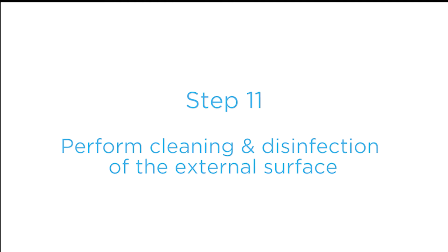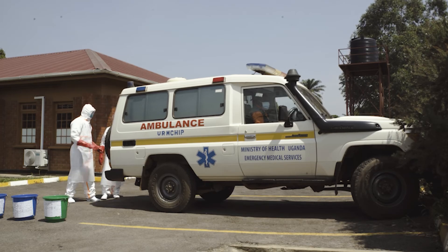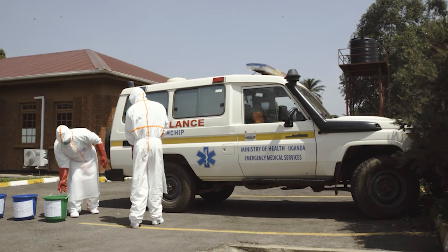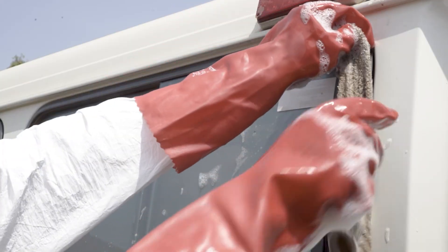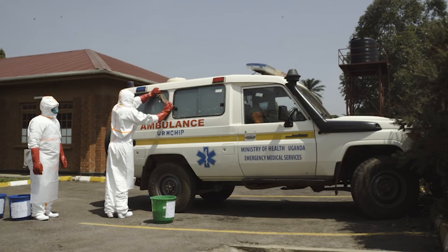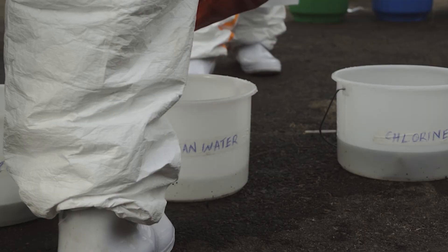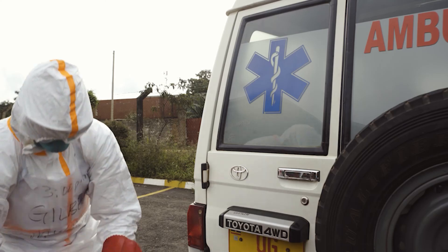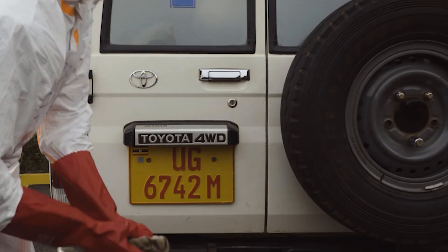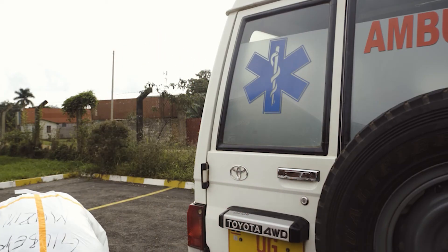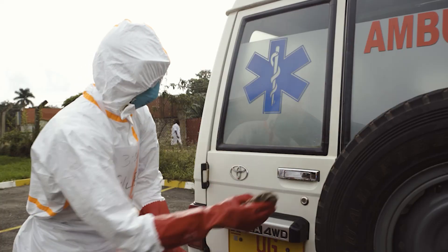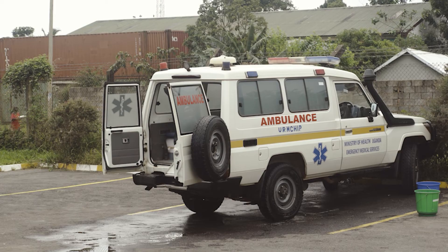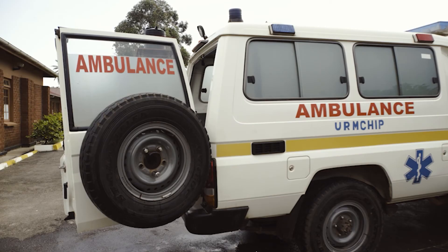Step eleven: perform cleaning and disinfection of the external surface. Clean thoroughly the external ambulance surface using separate buckets and newly prepared solutions. First, clean with soapy water. Second, rinse with clean water. Third, disinfect with 0.5% chlorine. Please note that the exterior of the ambulance does not require a full disinfectant wipe down, except for door handles. After a contact time of 10 minutes, remove chlorine residue with clean water. Lastly, let air dry. Allow the ambulance to be open and ventilated for about 20 to 30 minutes to minimize the odor of the disinfectant.